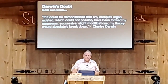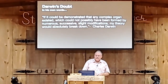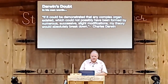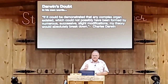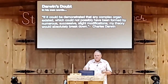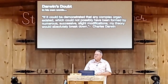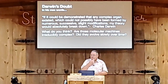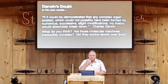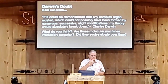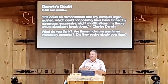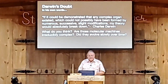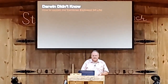Here's what Darwin said: 'If it could be demonstrated that any complex organ existed which could not possibly have been formed by numerous successive slight modifications, my theory would absolutely break down.' Are those molecular machines irreducibly complex? Did they evolve slowly over time? That's why they're looking for a better explanation.